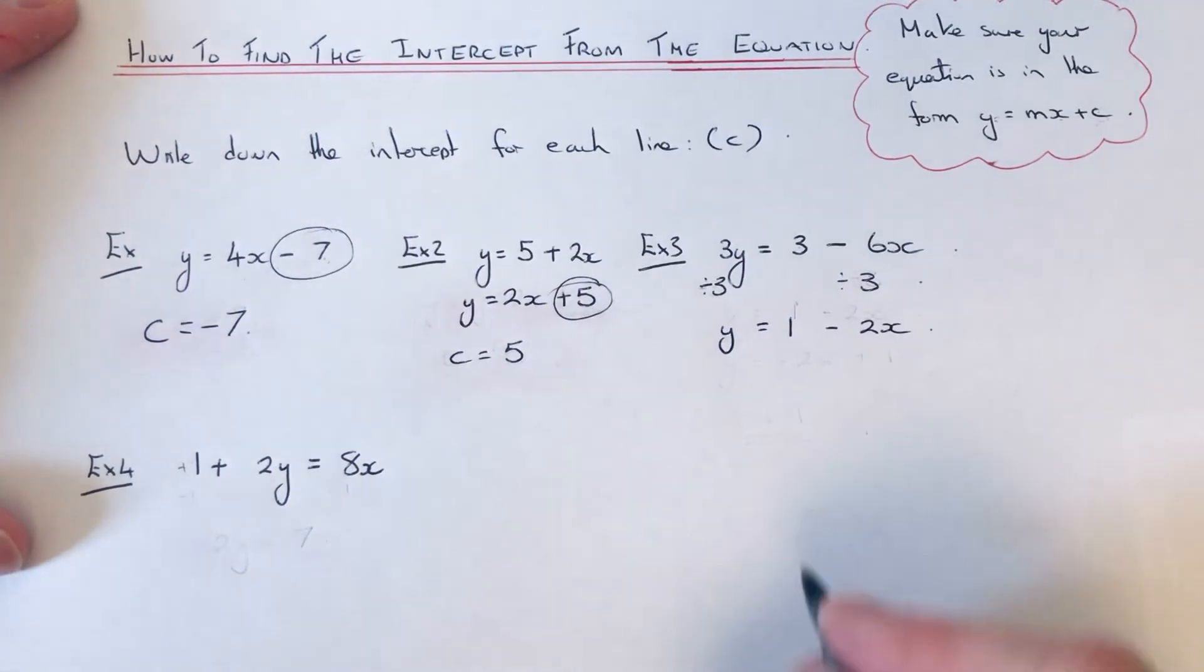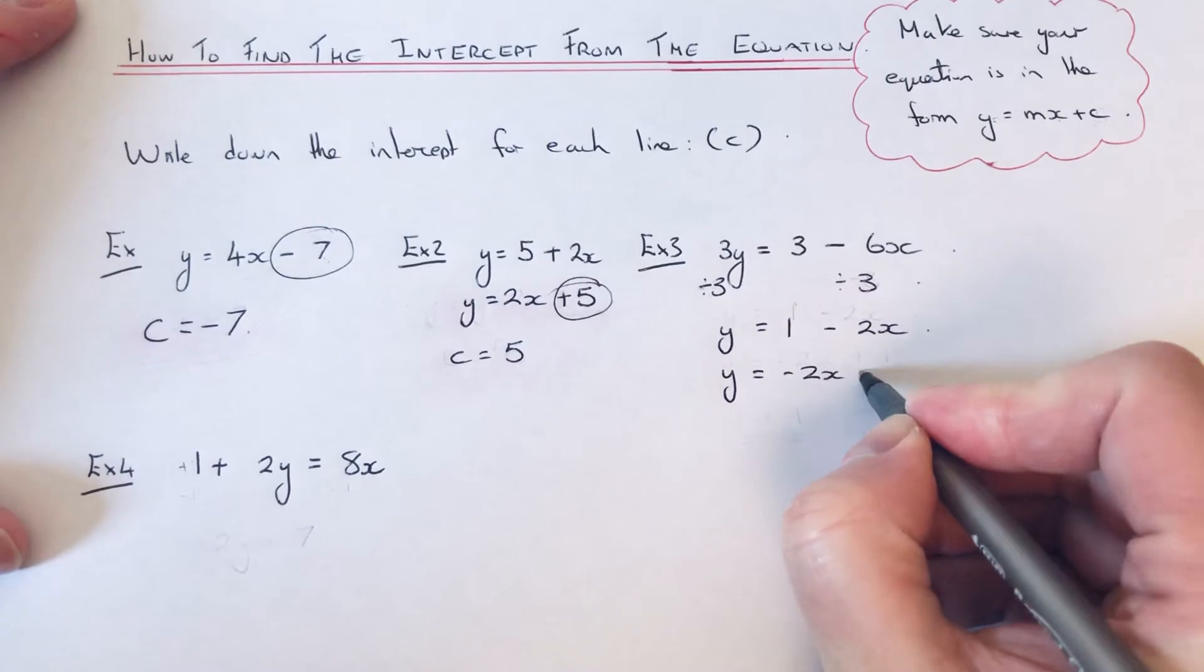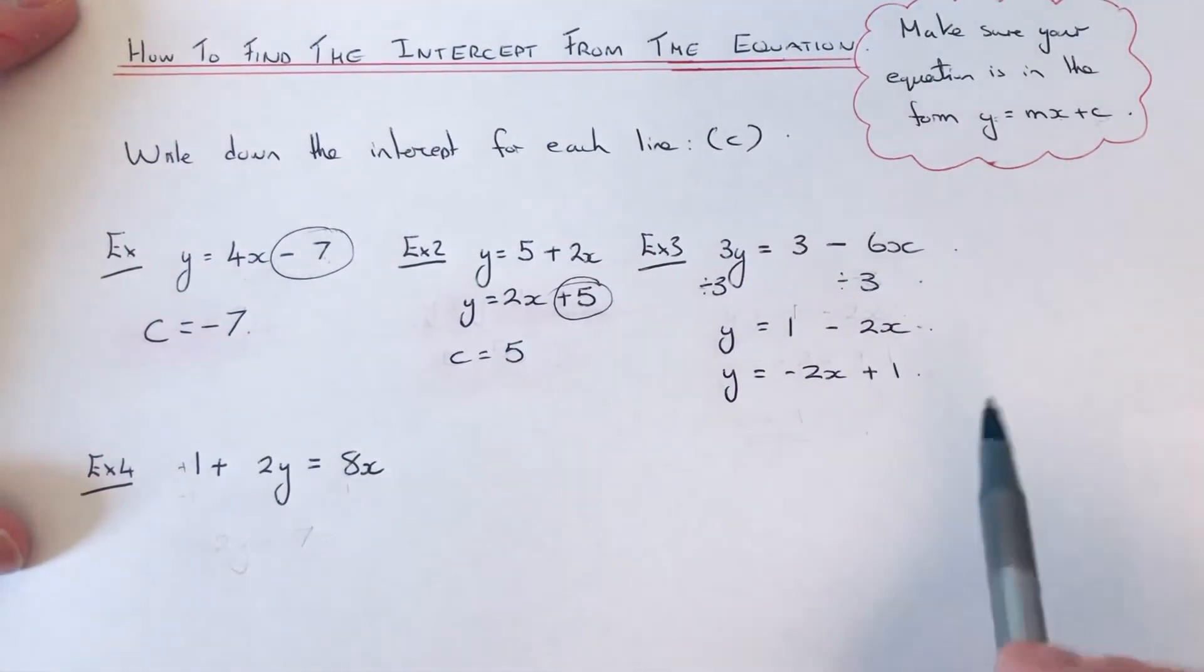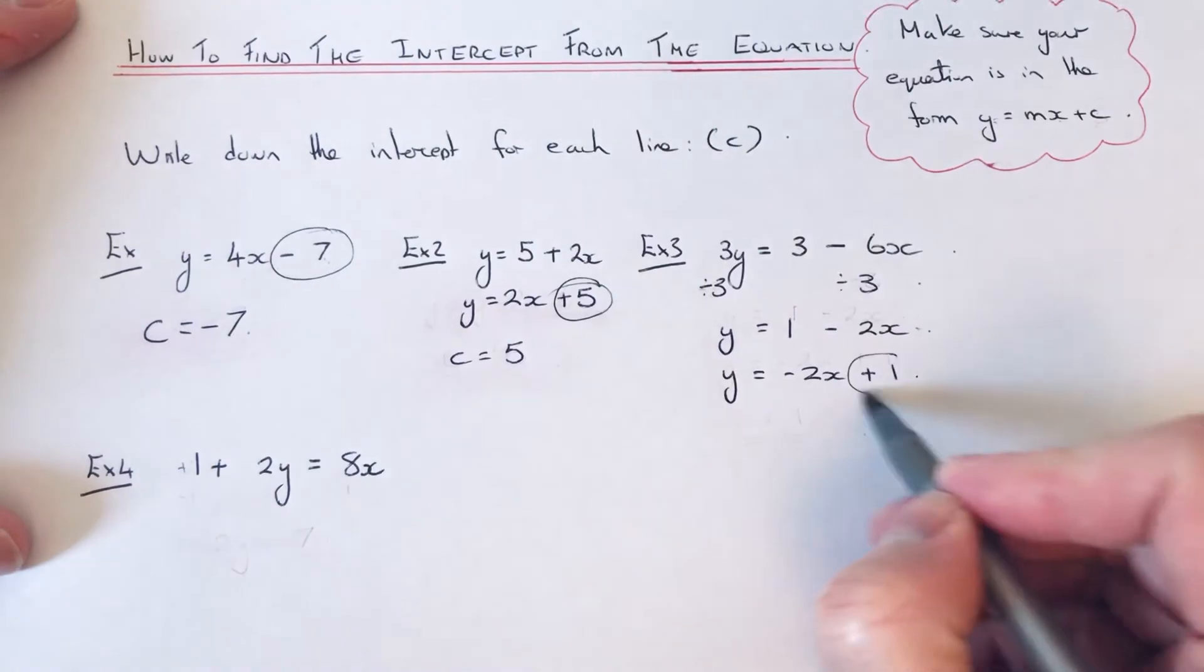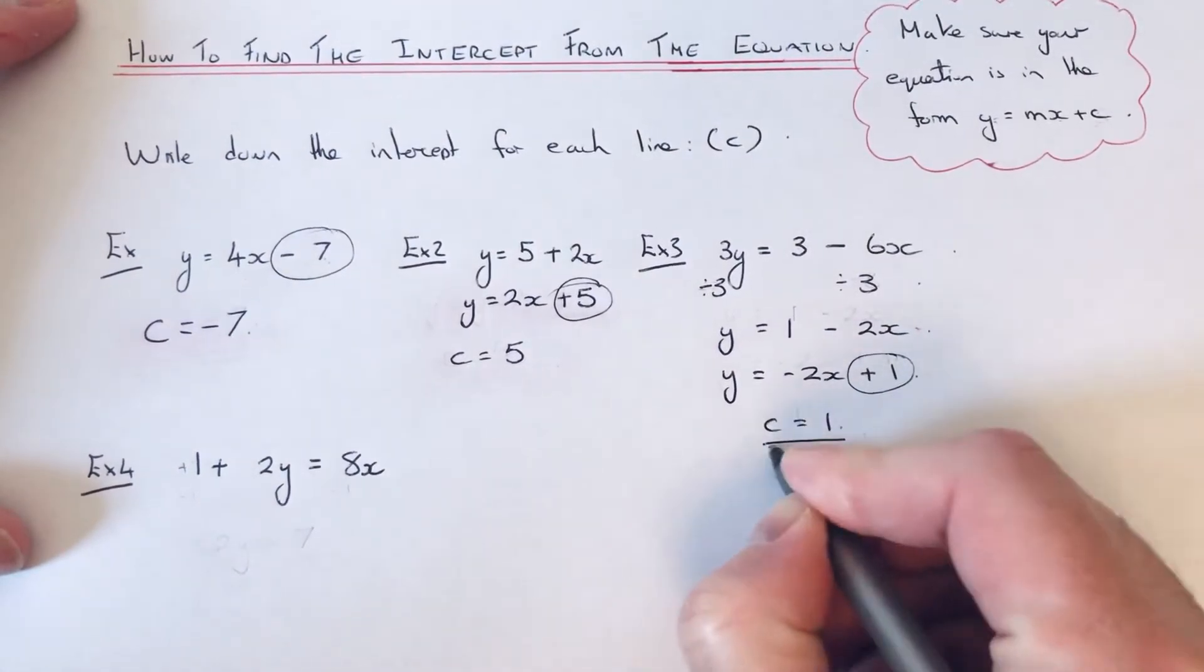I'm now going to put it in the correct order as well and write it as y equals minus 2x plus 1. So again, we can just look at the number at the end now, which is plus 1, and that is our intercept. So c equals 1.